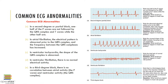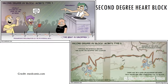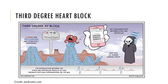Common EKG abnormalities include a second-degree or partial block, where one half of the P waves are not followed by QRS complex and T waves. Atrial fibrillation, ventricular fibrillation, ventricular tachycardia, and a third-degree block can also be seen. A first-degree block, second-degree heart block, and complete blockage are also demonstrated.